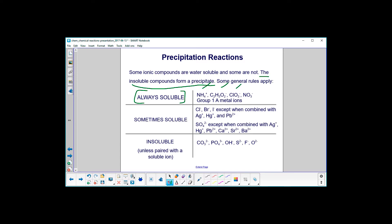Ammonium, acetate, chlorate, nitrate, and group 1A metal ions. So at least you can remember that, and try and remember these four guys here.